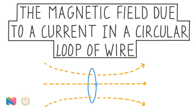In this video, our topic is the magnetic field due to a current in a circular loop of wire. We're going to learn how to calculate the magnitude of this field's strength at the center of these circular loops, and we'll also learn how to determine field direction.